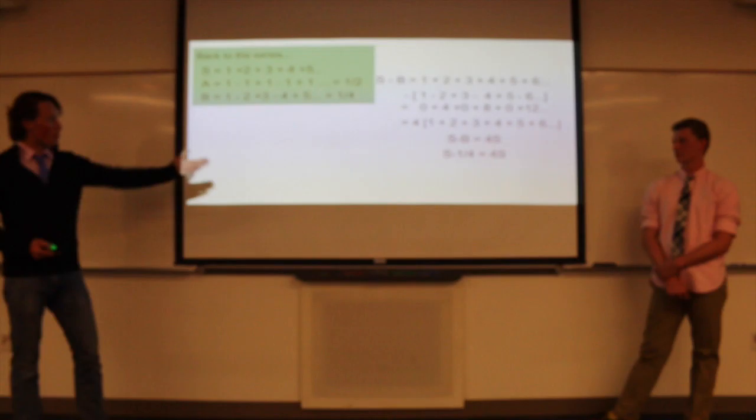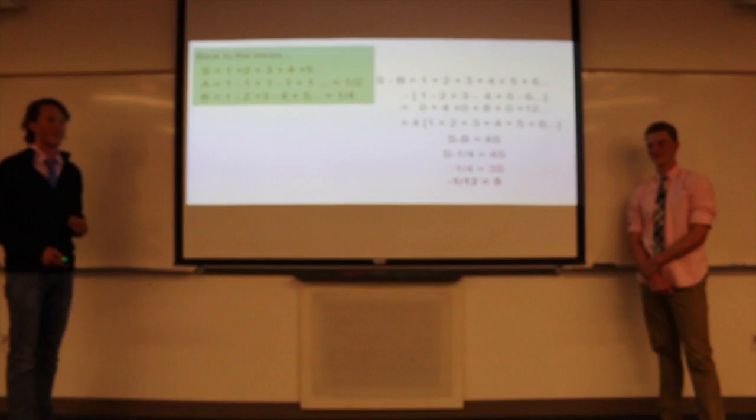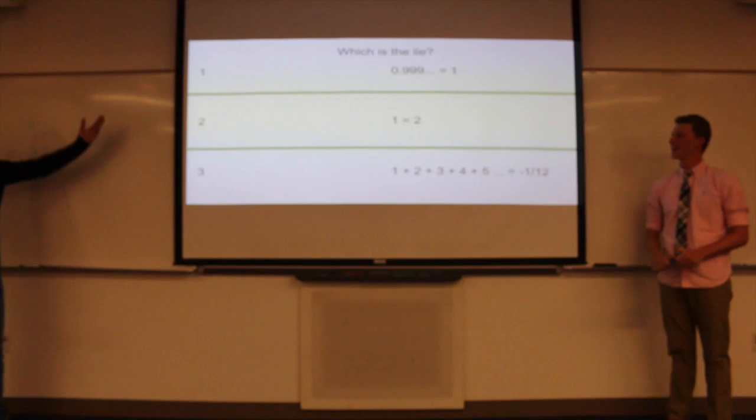And so if you look at that, that actually looks really familiar. If we factor out a 4, we're actually left with 1 plus 2 plus 3 plus 4 plus 5 plus 6 or S. So now we have S minus B equals 4S, or S minus 1/4 equals 4S. Negative 1/4 equals 3S. And now dividing both sides by 3, negative 1/12 equals S.